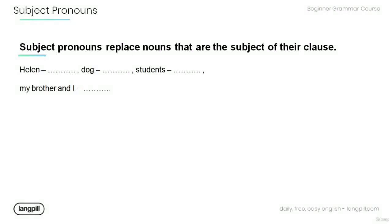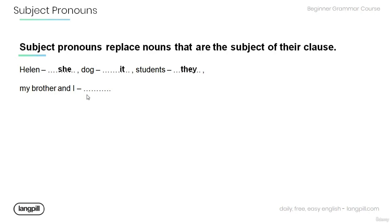Now let's review and practice. Remember, subject pronouns replace nouns that are the subject of their clause. What would be the proper subject pronoun to replace the word 'Helen'? — 'she.' And 'dog'? — 'it.' 'Students'? — 'they.' 'My brother and I'? — 'we.'